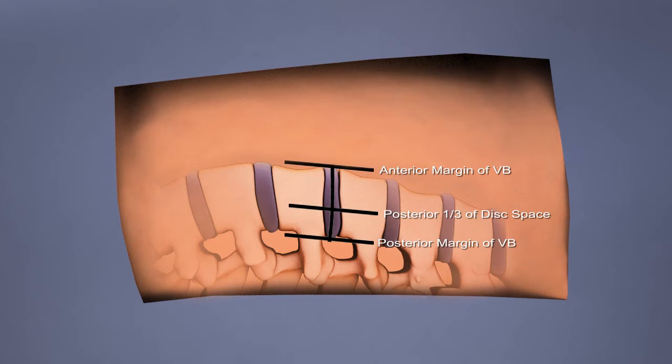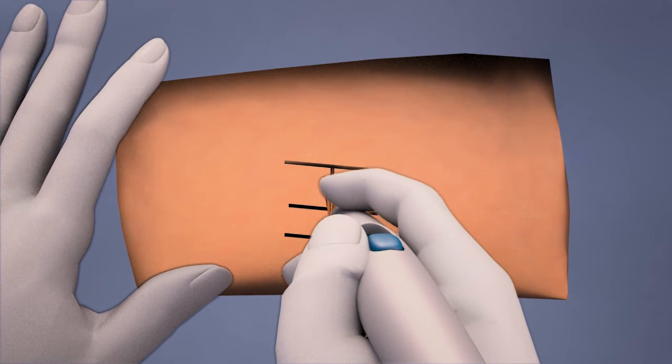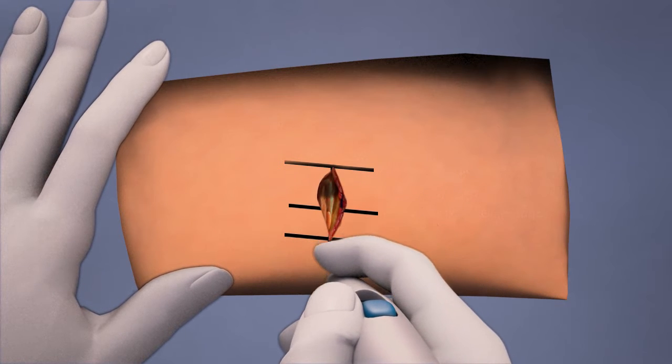Using a K-wire and lateral fluoroscopy, identify the surgical entry point. The surgeon should target midline to the posterior third of the disc space of the level that will be fused. A transverse incision is made through the skin and subcutaneous fat.